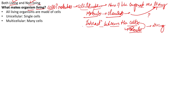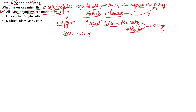All living organisms are made up of cells. However, you also see certain exceptions to this rule — the exceptions mainly include the virus. Viruses are exceptions because they belong to the realm of both living and non-living. We can say that they are both living and also non-living.